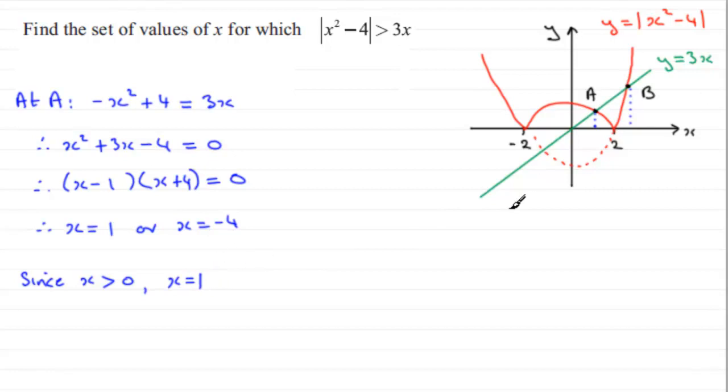We need to go on to look at B next. Now at B, we know that we're looking at this part of the curve intersecting y equals 3x. So that's going to be the positive version of x squared minus 4. So we've got x squared minus 4 has got to equal 3x. And if that's the case, rearranging this, we therefore have x squared minus 3x minus 4 equals 0.